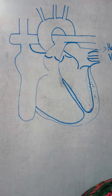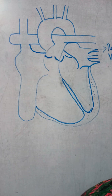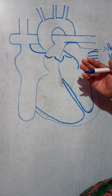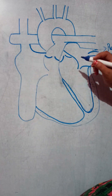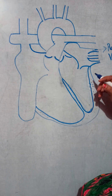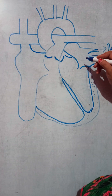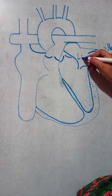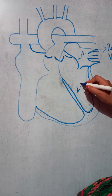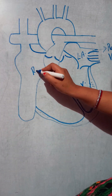The veins which are directly connected to our lungs are known as pulmonary veins. Remember that pulmonary means lungs. The human heart is four-chambered. The upper two chambers are known as atria and the lower two chambers are known as ventricles. This is the left atrium, which I'm denoting as LA, and this one is the left ventricle. Here you can see this one is the right atrium.